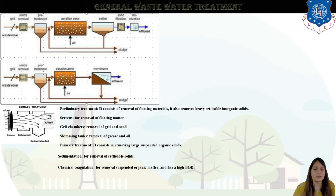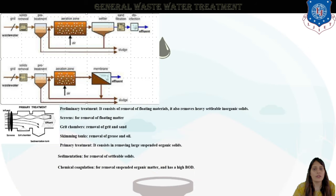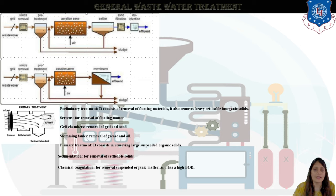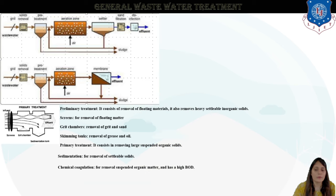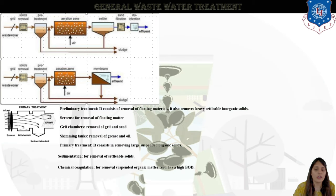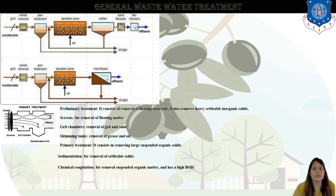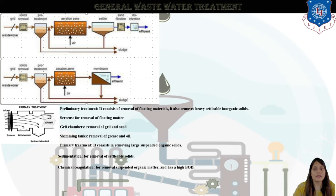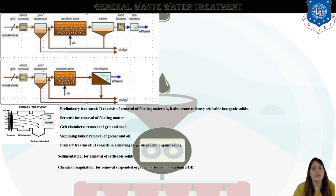Primary treatment consists of removing large suspended organic solids. Sedimentation is used for removing settleable solids — the settled particles are removed through sedimentation. Sedimentation and chemical coagulation are also used: the coagulation process removes suspended organic matter which has a high BOD — biological oxygen demand. So chemicals are provided to achieve removal of hazardous material and harmful organisms and organic matter.